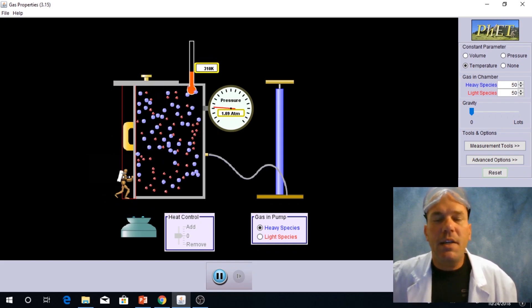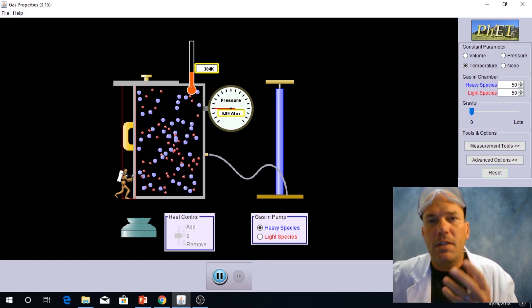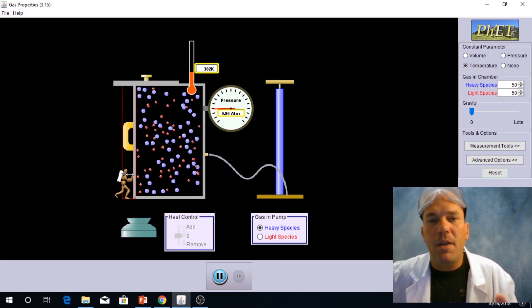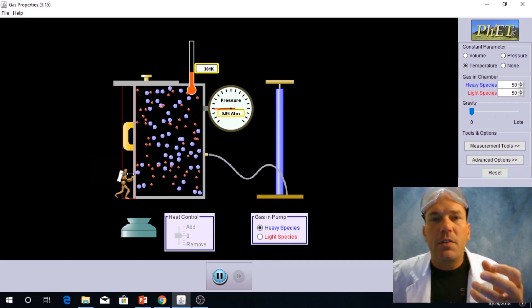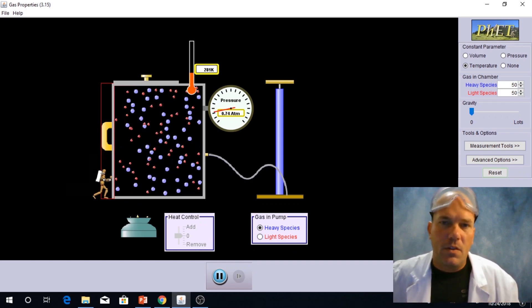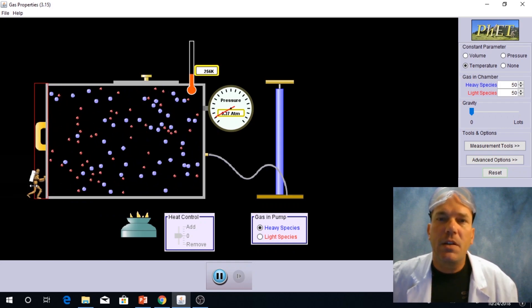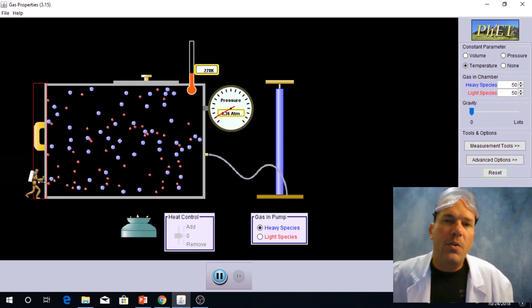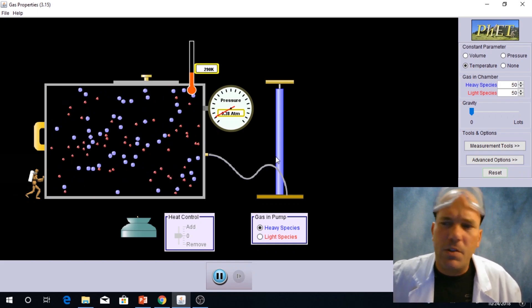So what we're seeing is that as I decrease the volume, I'm increasing the pressure. So if I increase the volume, we should see the pressure decrease. So they are inversely proportional.